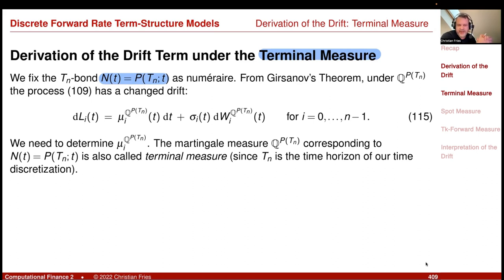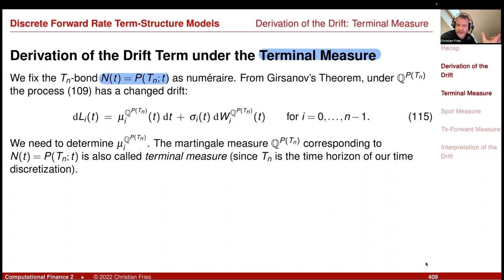The terminal numeraire has a few things that are not so nice. For example, whenever you extend your model to increase the time horizon, you have to change the numeraire and the whole model changes. It may be nicer to have a model that just runs on — which will be our next choice, the spot measure. From Girsanov's theorem, doing the change of measure is a change of drift, so instead of determining what the measure is, we determine how the stochastic process looks under that measure.